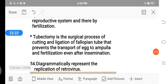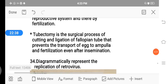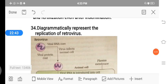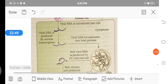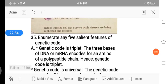Next is tubectomy. It is a surgical process in which we also cut the fallopian tube that prevents the transport of egg to the ampulla in the female reproductive system. That prevents insemination. Next, the diagram-oriented question is, diagrammatically represent the replication of retrovirus, that is HIV virus. We are just going to write this diagrammatic representation.